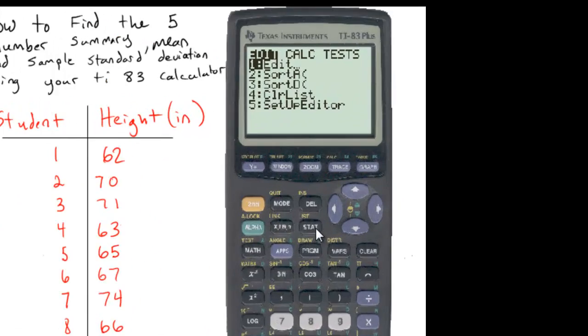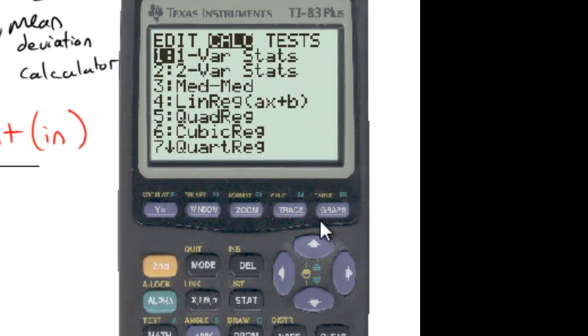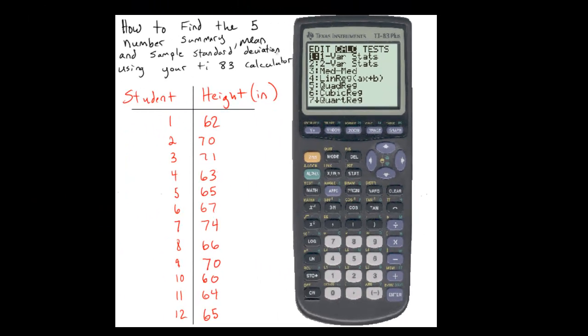If I hit the stat key, it's located right here. And then I go over to the calculate submenu under stat. Notice there's a function called one var stats and that's what we're interested in. This is going to tell us the five number summary, the mean and the sample standard deviation. And hit enter on that.